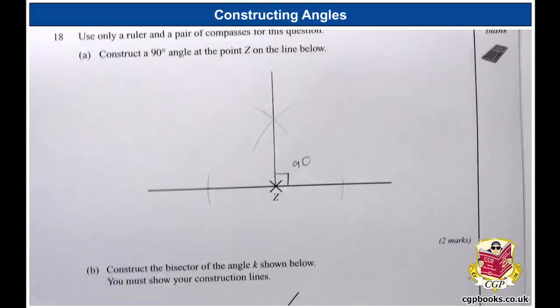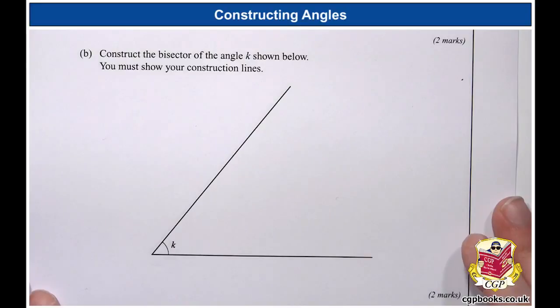Okay. I'm going to slide this up then. Let's have a look at part B. So now we are asked to construct the bisector of angle K. Now we're not told how big angle K is, but quite frankly, it doesn't matter. We don't care. We just want to chop it in half. So put a line through it like this.